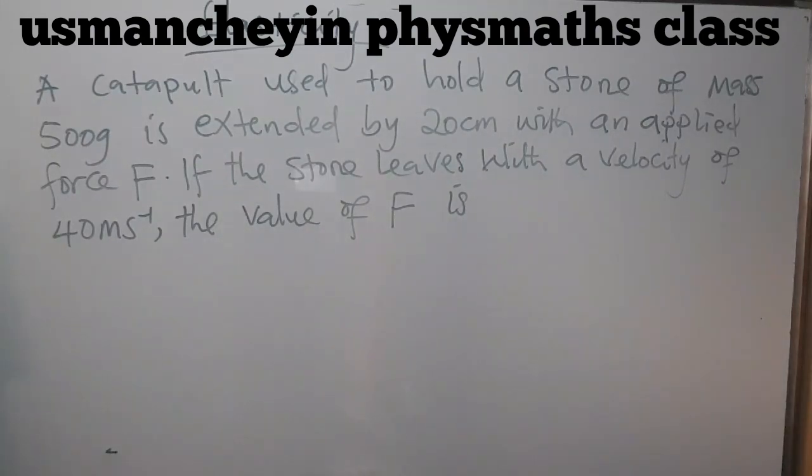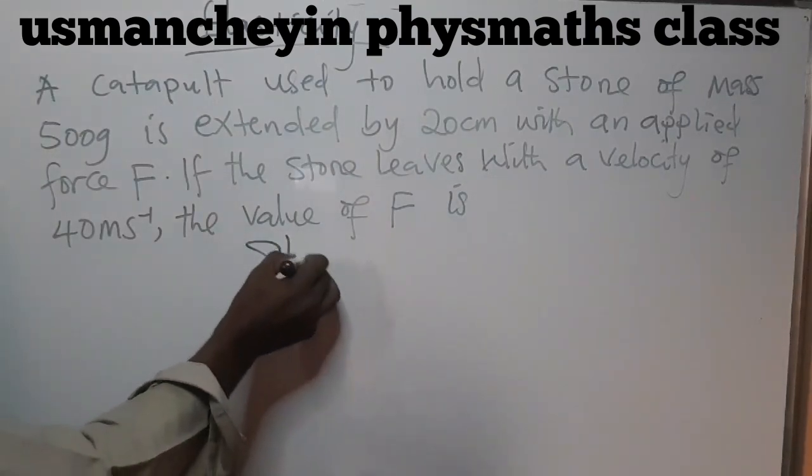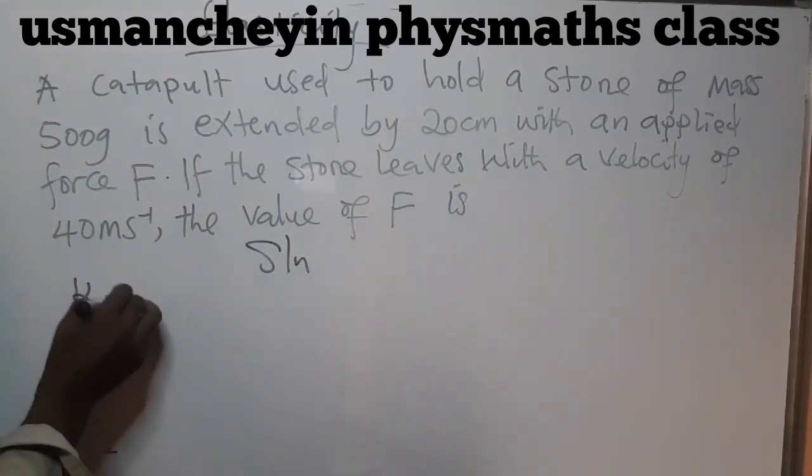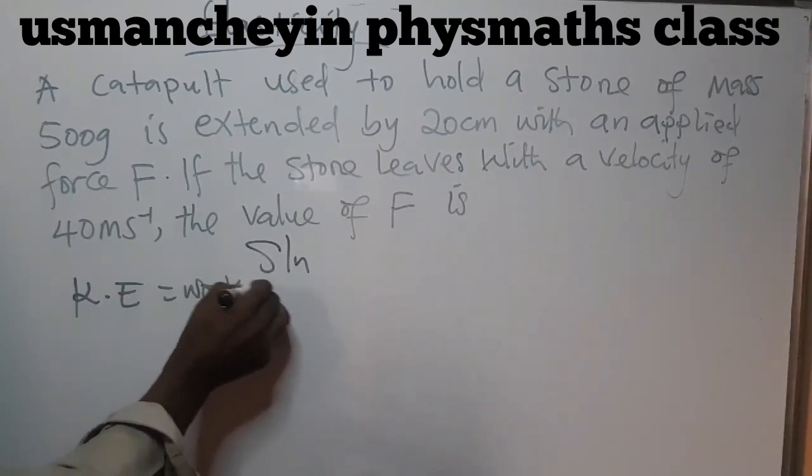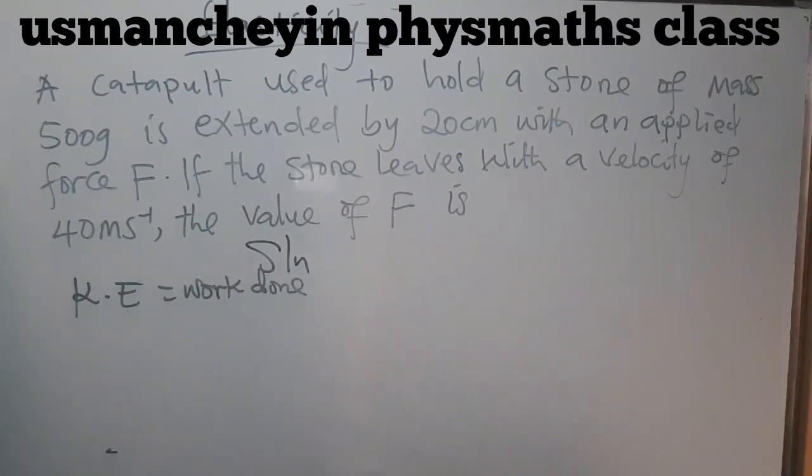The speed at which the stone is leaving the catapult is given by 40 meters per second. We have various methods to solve this type of question, but one of the simplest ways is to apply this formula: kinetic energy is equal to work done by the catapult.